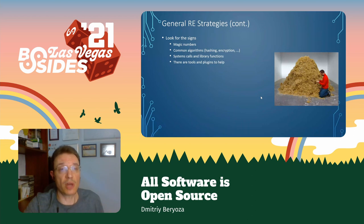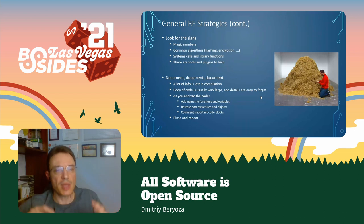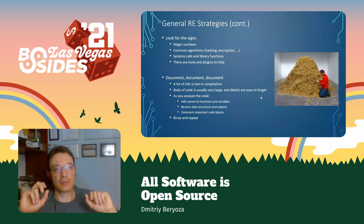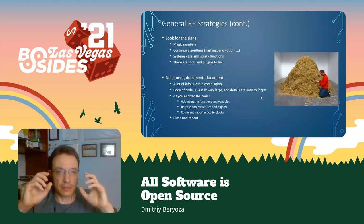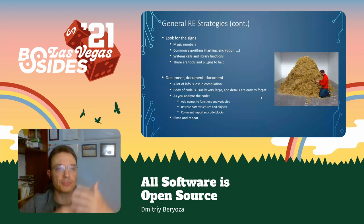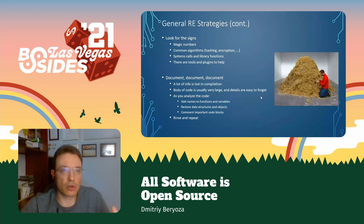Documentation is very important because you're dealing with a very complex activity. There's a lot of info lost in compilation. As you slowly gain understanding of what different fields are and what different functions are, give them meaningful names — a lot of tools allow you to do that. Add documentation as you go, add comments, restore data structures. You'll see that as you do that iteratively in a rinse-and-repeat fashion, you will discover the overall understanding much more quickly compared to just staring at code without documenting anything.